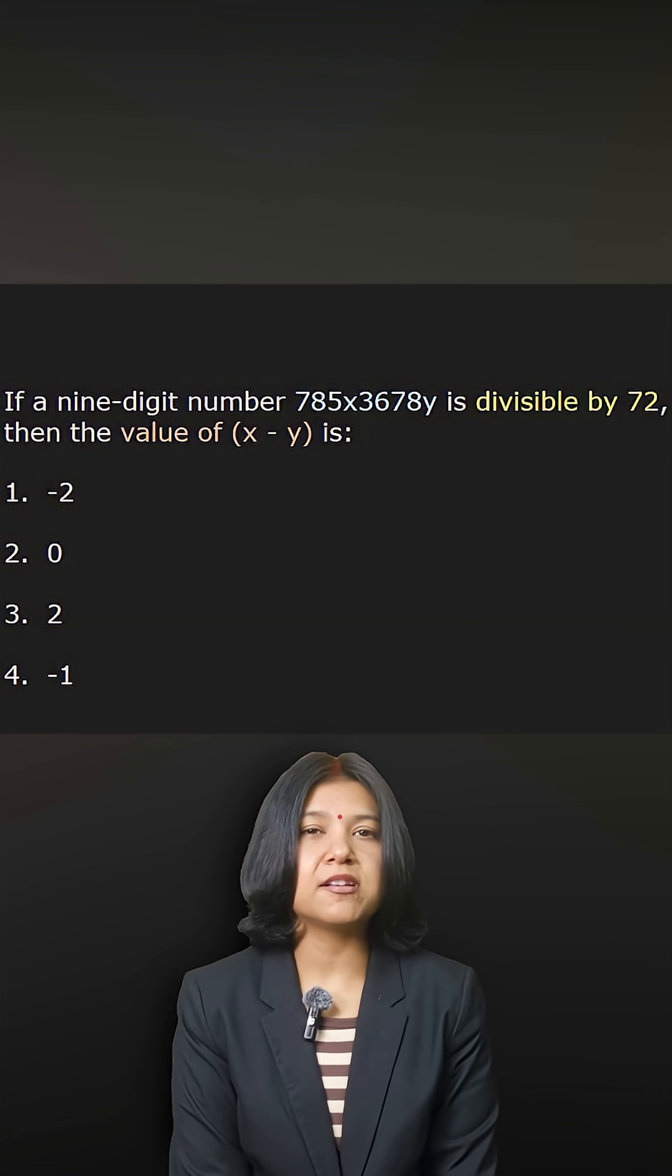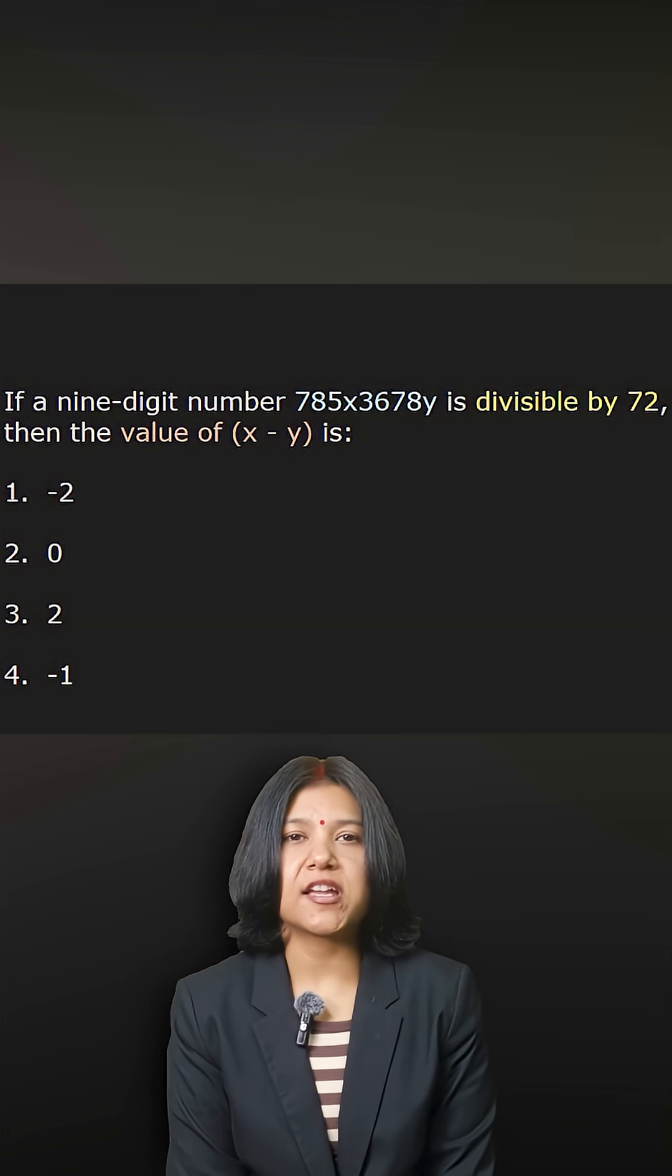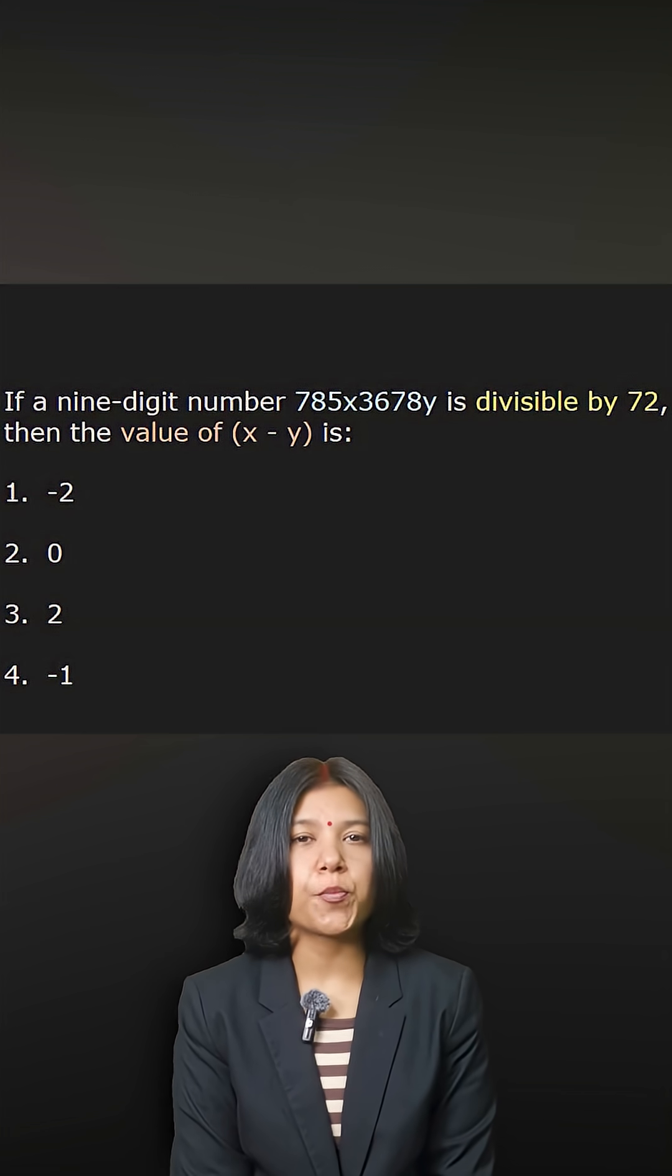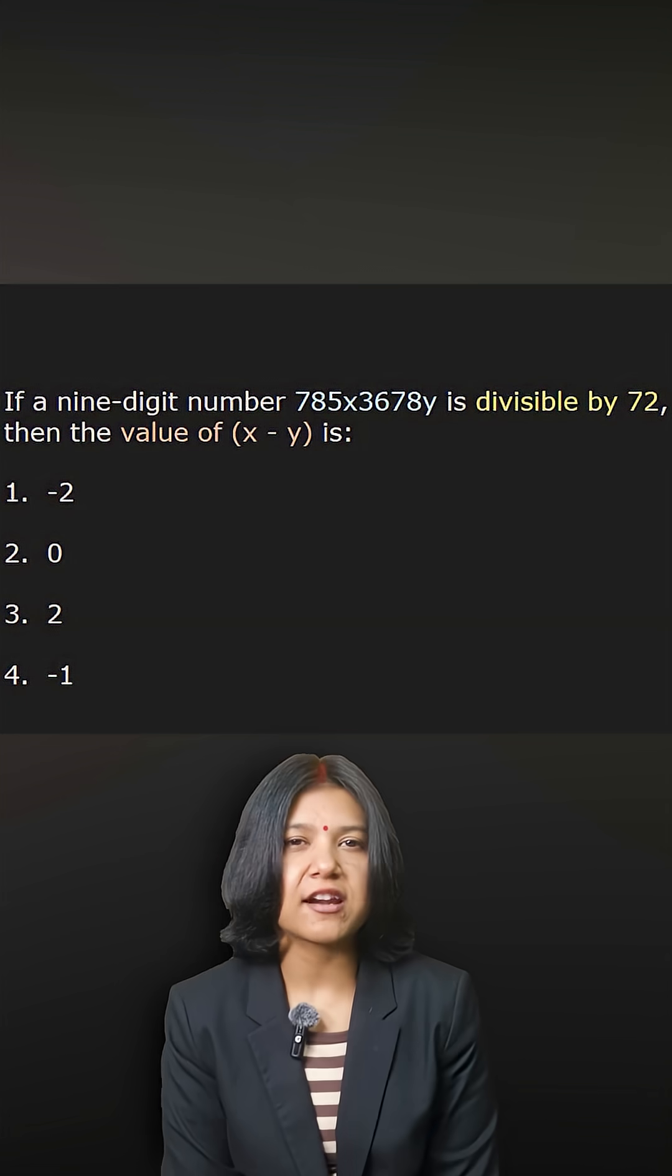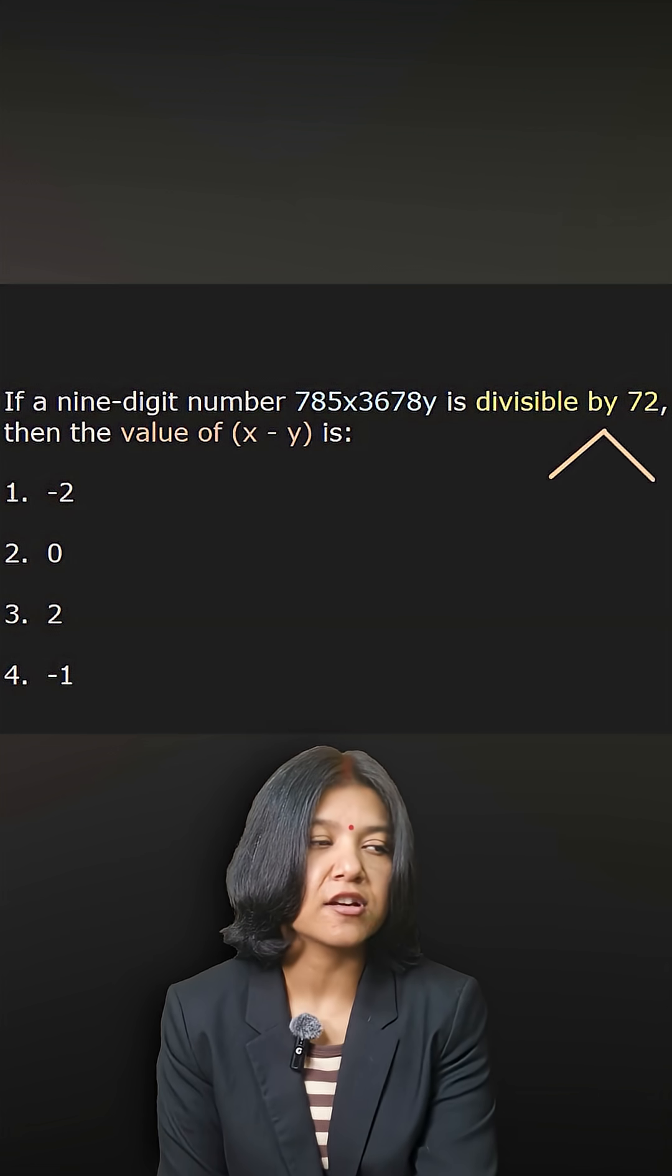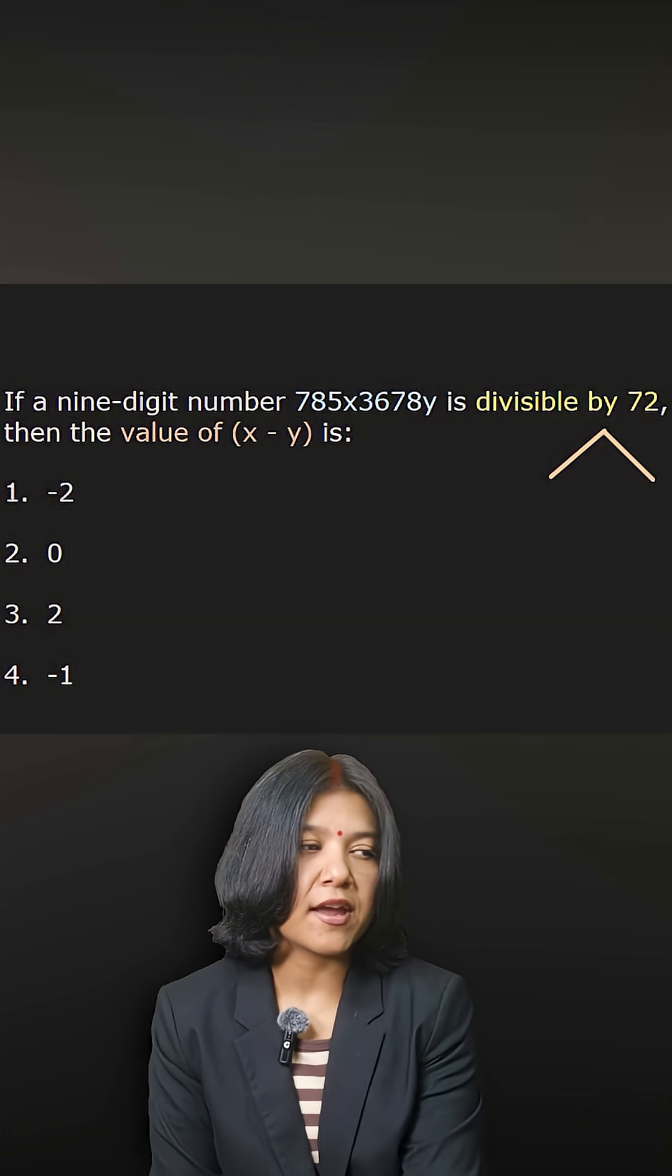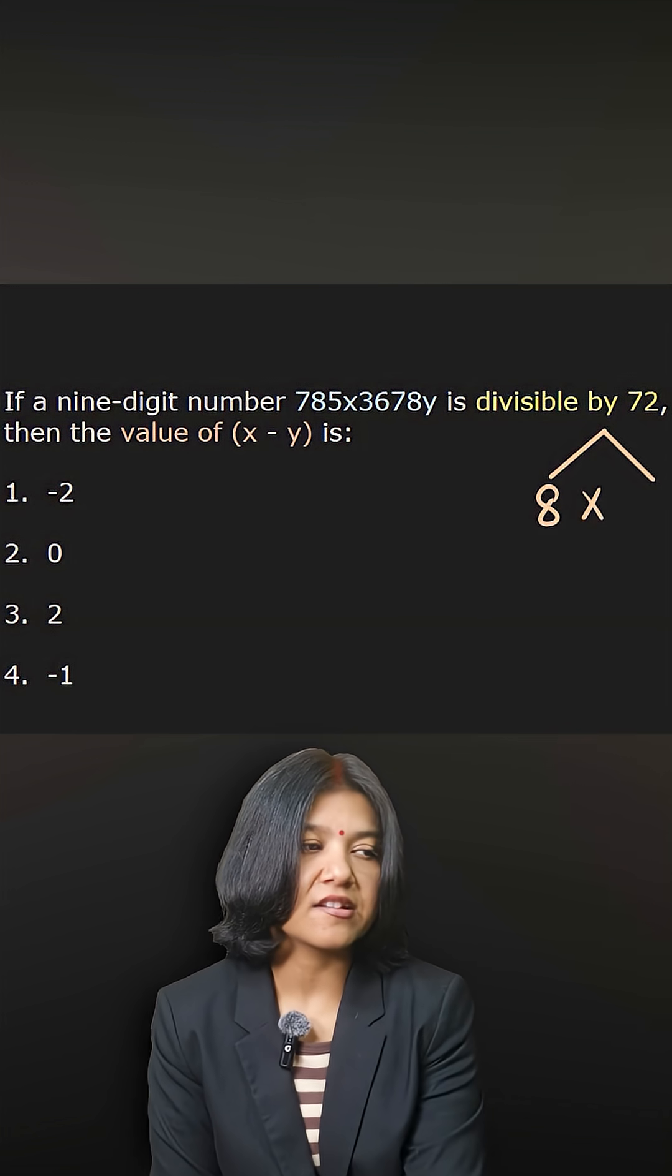You want a certain number to be divisible by 72. Note that if you have one divisor, you can break it into two coprime factors. Coprime means they are not divisible by each other, or their highest common factor is 1. I know one such pair: 8 times 9 is 72.